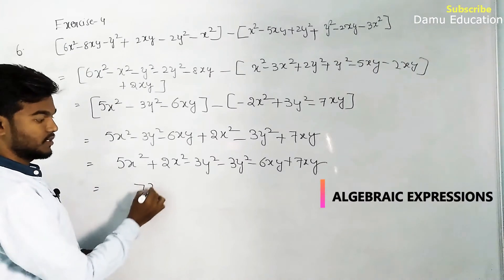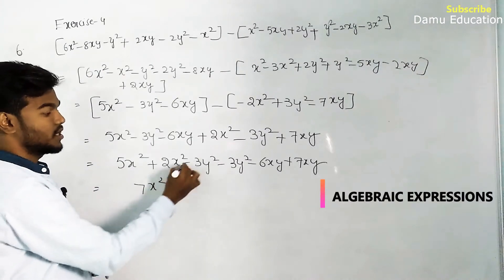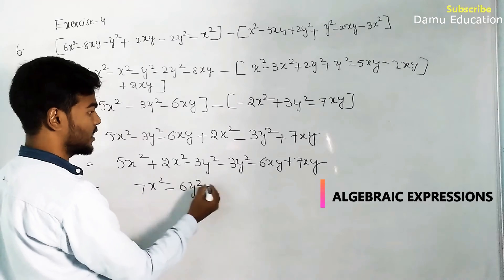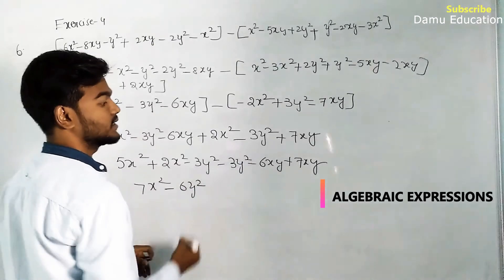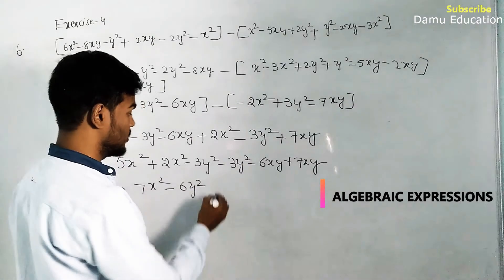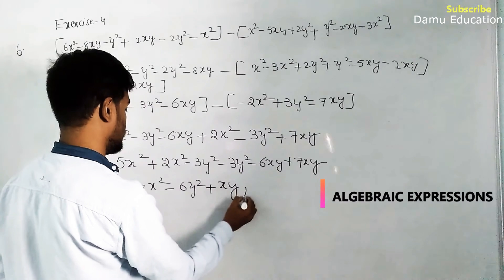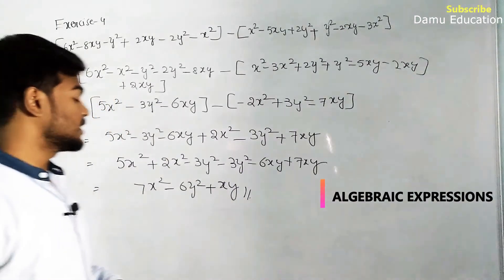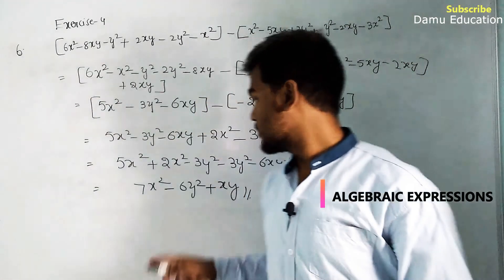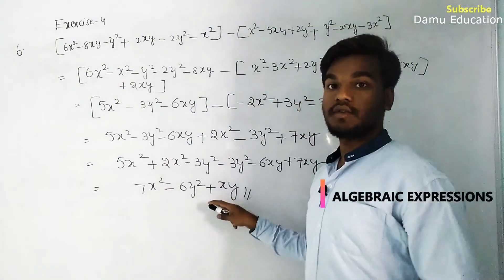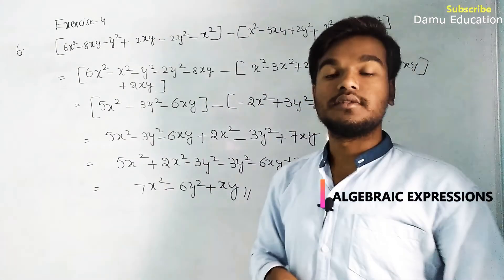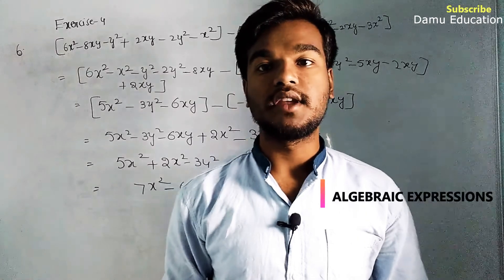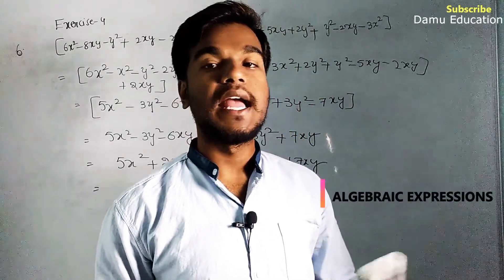Simplifying the final expression: 5 plus 2 gives 7x², minus 3y² minus 3y² gives minus 6y², and minus 6xy plus 7xy gives plus xy. So the final answer is 7x² minus 6y² plus xy. For more videos please watch here on YouTube and please subscribe.